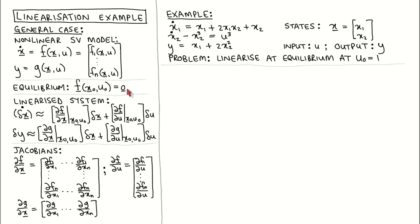The deviation from the equilibrium point can be approximated by this linear state variable model. The state matrices are called Jacobians and their definitions are shown over here.